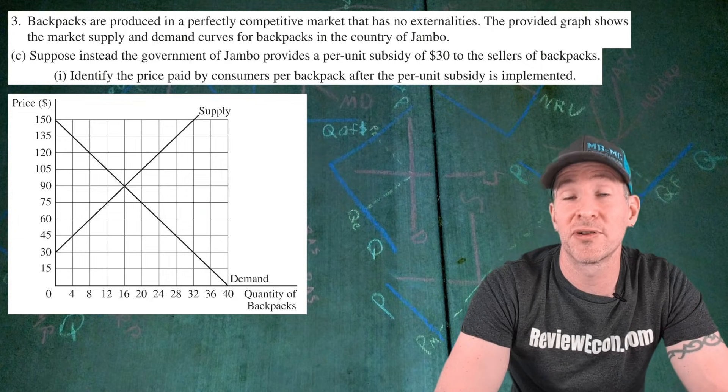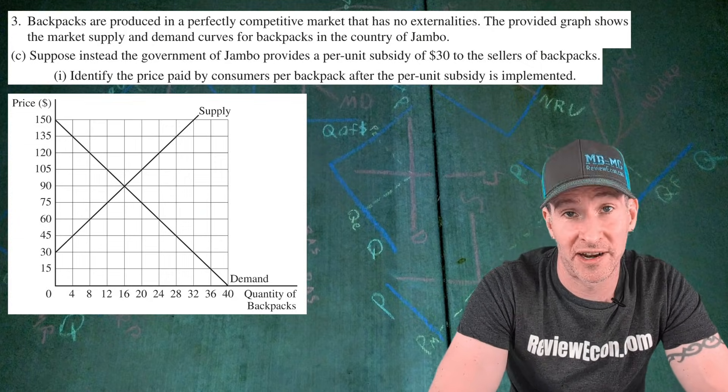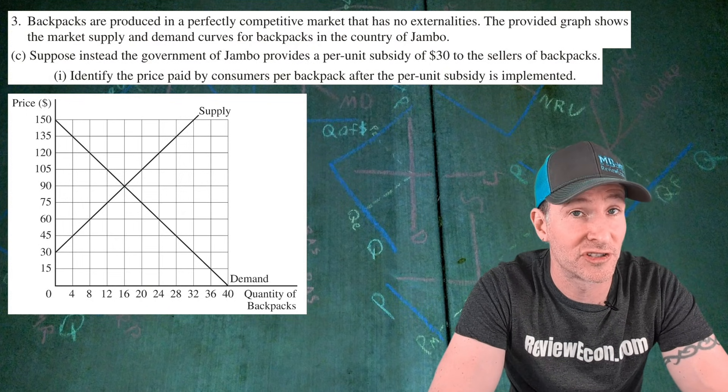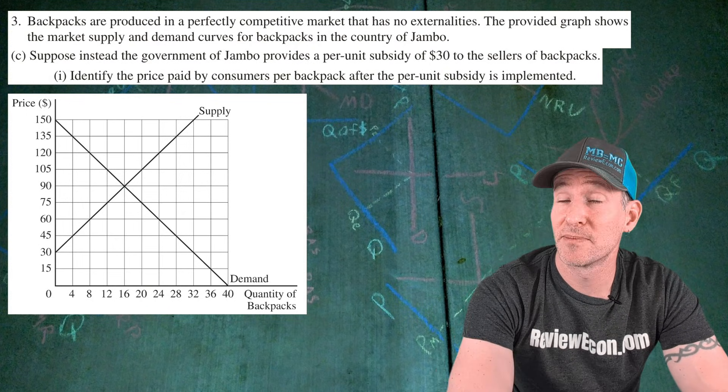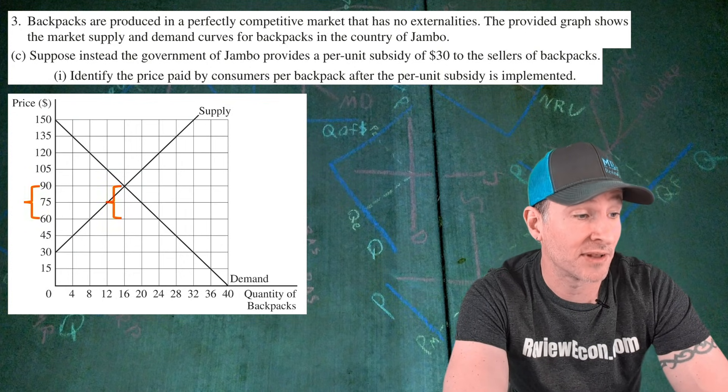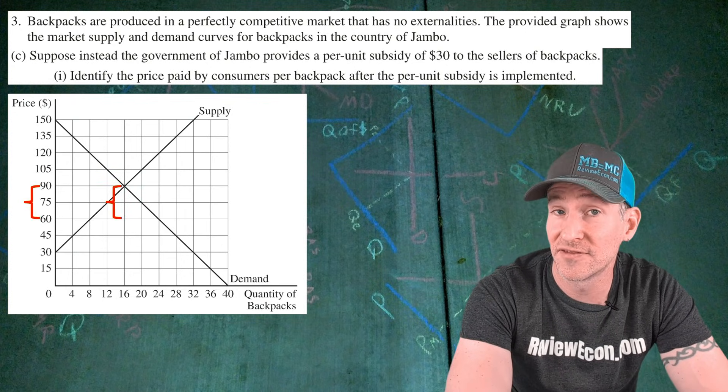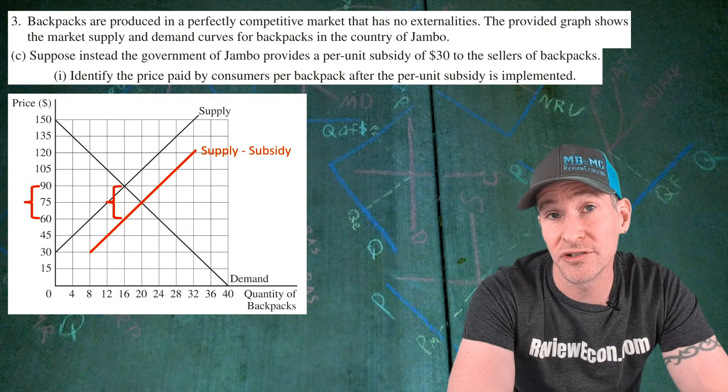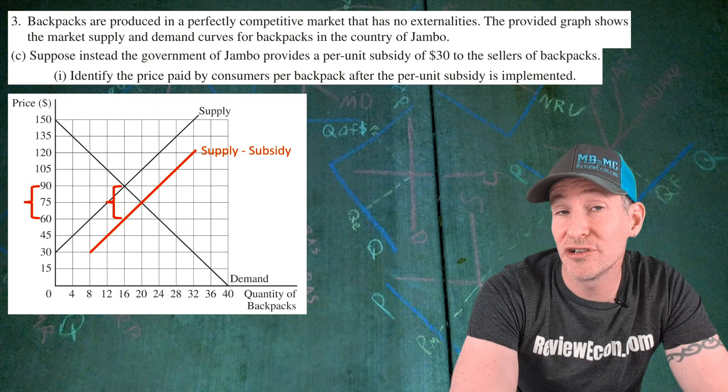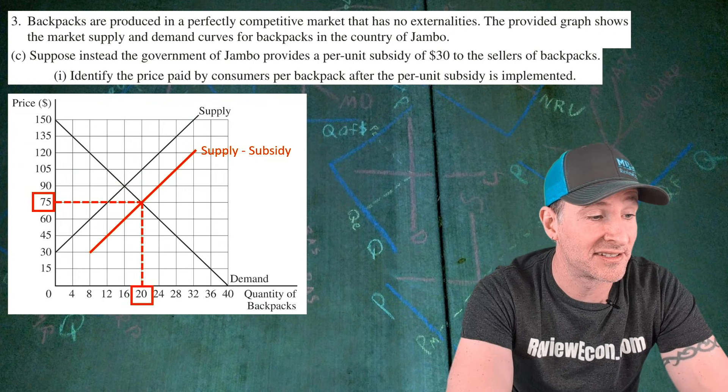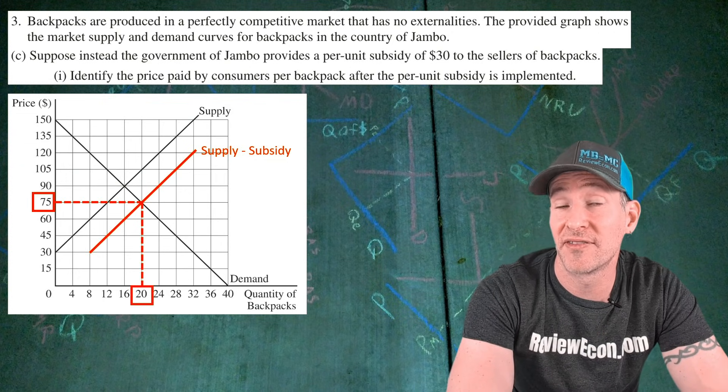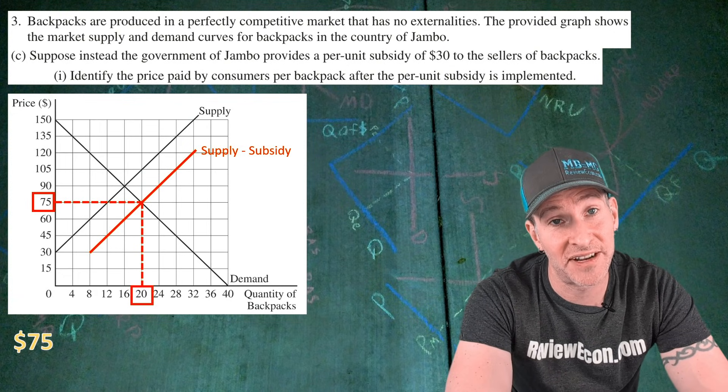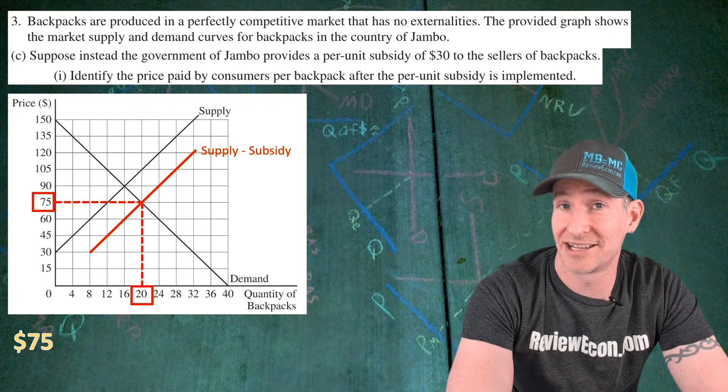For part C, we are told there's a $30 subsidy provided to the sellers of this product. Based on that subsidy, we are going to identify the price paid by consumers as a result of the subsidy. Remember that a subsidy provided to the producers is going to shift the supply curve, the vertical distance of the subsidy. There's a $30 distance right there. I'm going to draw in a new supply curve minus the subsidy. And it's the new intersection of the supply minus the subsidy and the demand curve where we find the new equilibrium price and quantity. For this question, we're going to identify the price of $75. And if you have that, you get your next point.